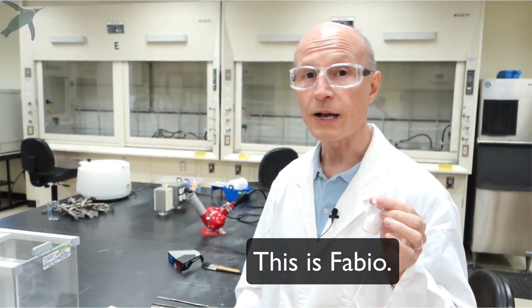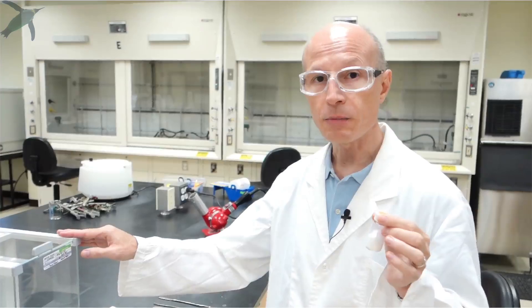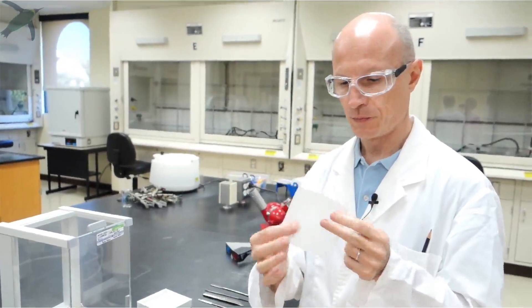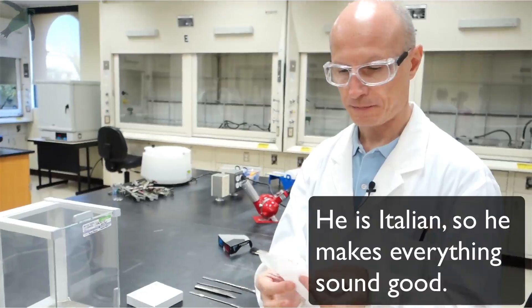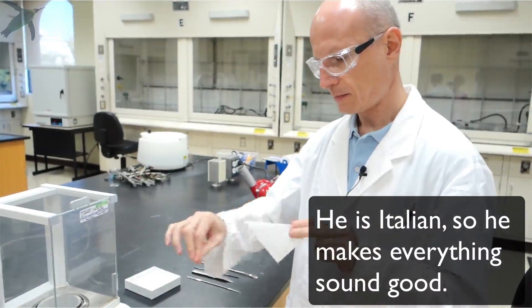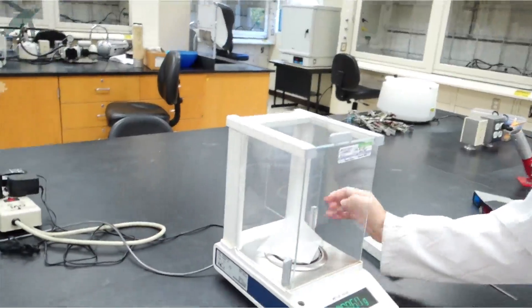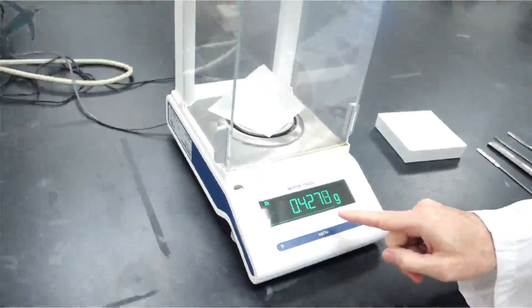To accurately weigh an organic solid, you use an analytical balance. Usually I use a piece of weighing paper that I fold in half, and I put it on the pan. You zero the balance.